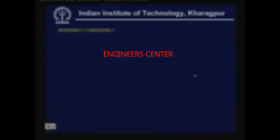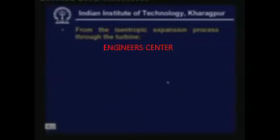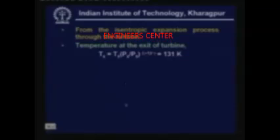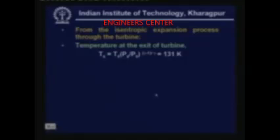Finally, we find the temperature at the exit of the turbine, T6. Process 5 to 6 is isentropic expansion, so T6 = T5 × (P6/P5)^((γ−1)/γ). T5 is 253 K, P6 is 100 kPa, and P5 is 1000 kPa. Substituting these values, T6 is equal to 131 K.